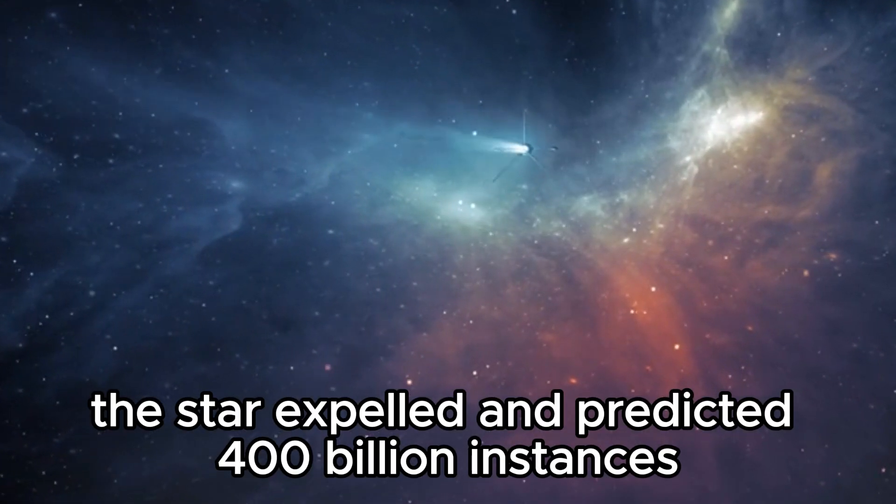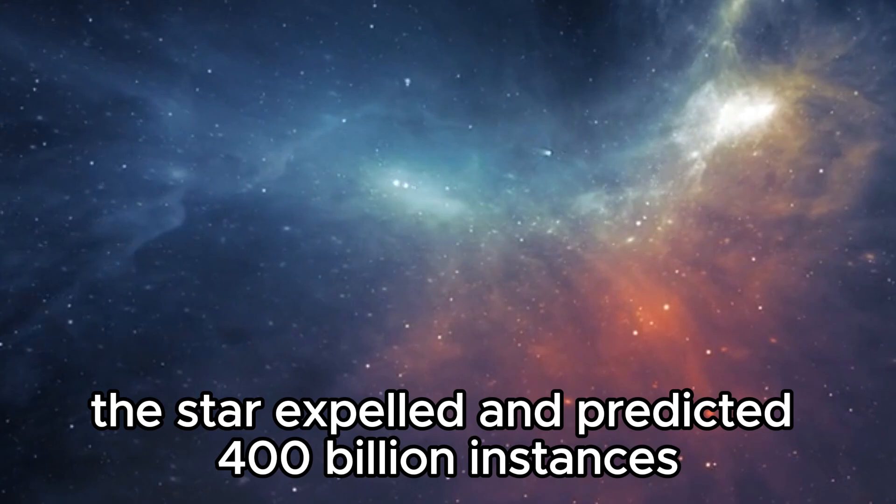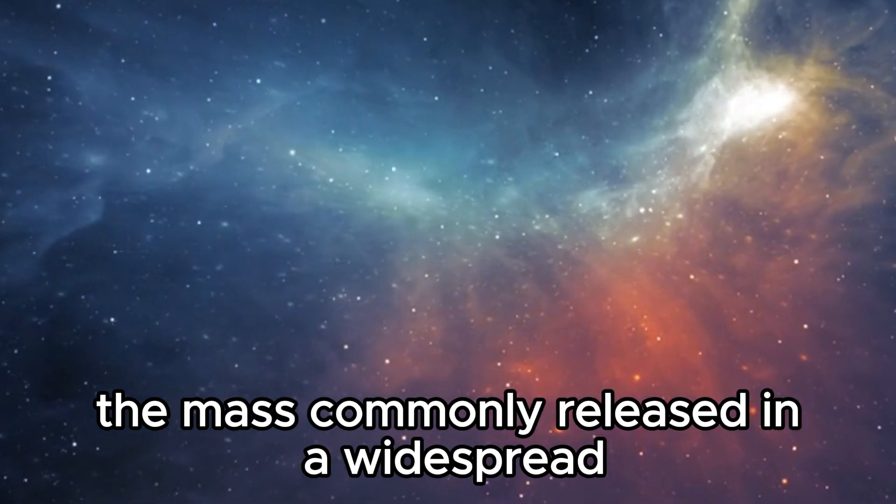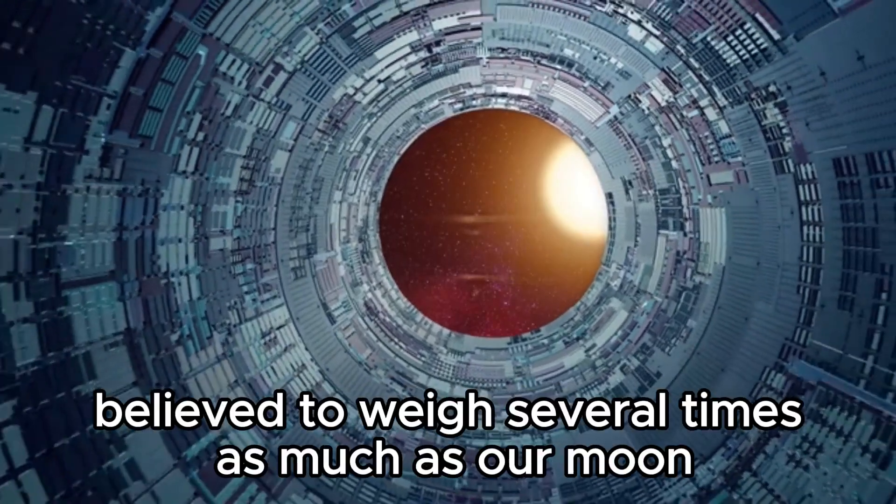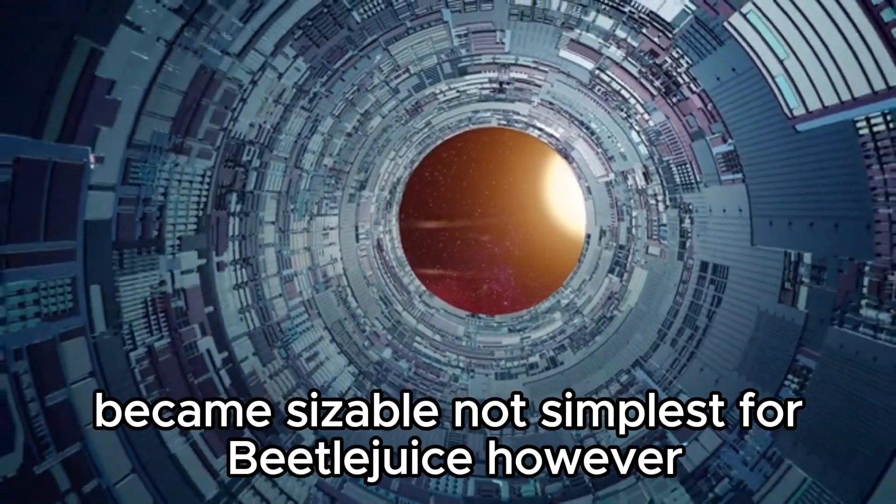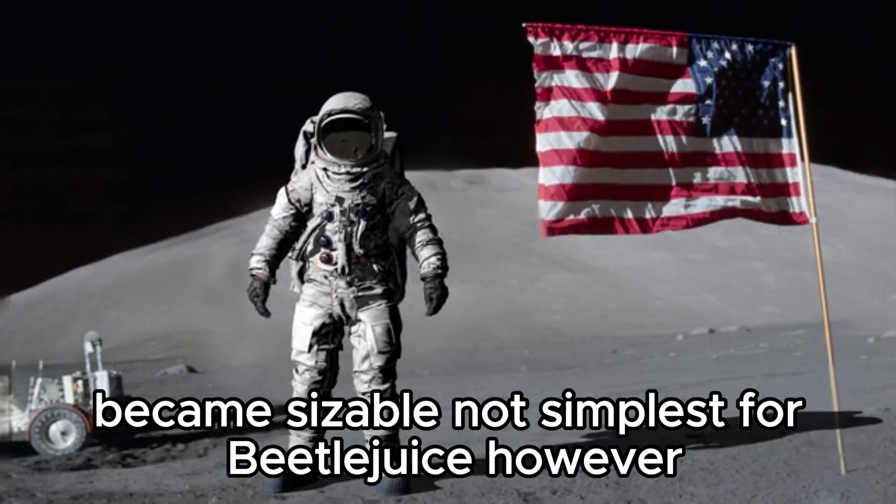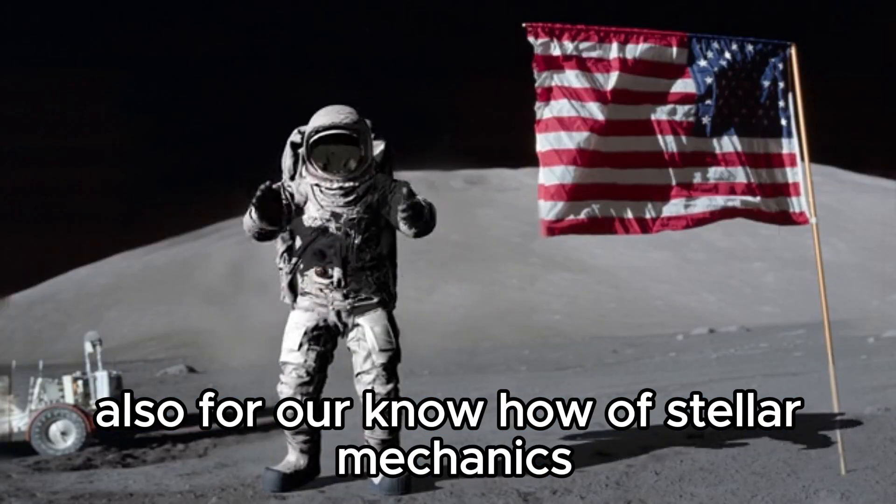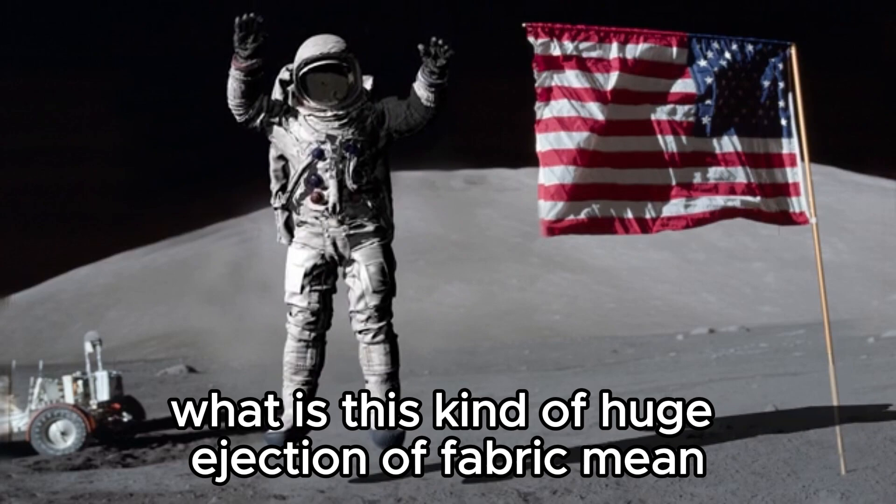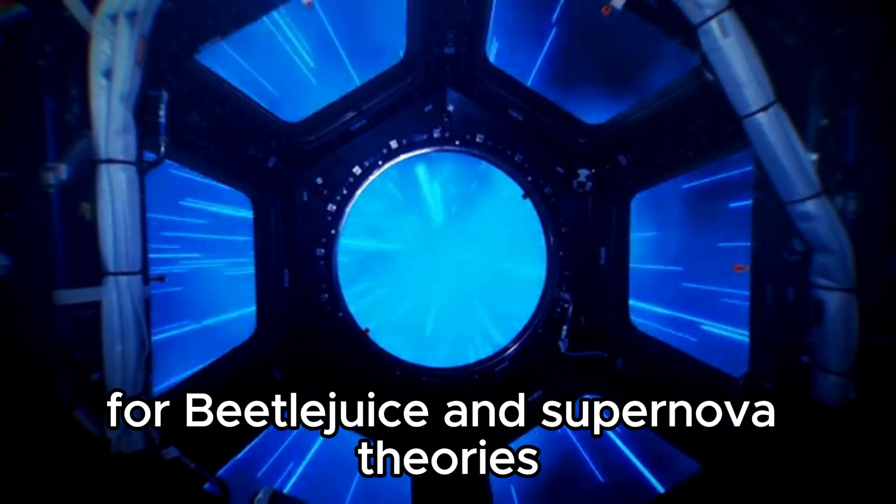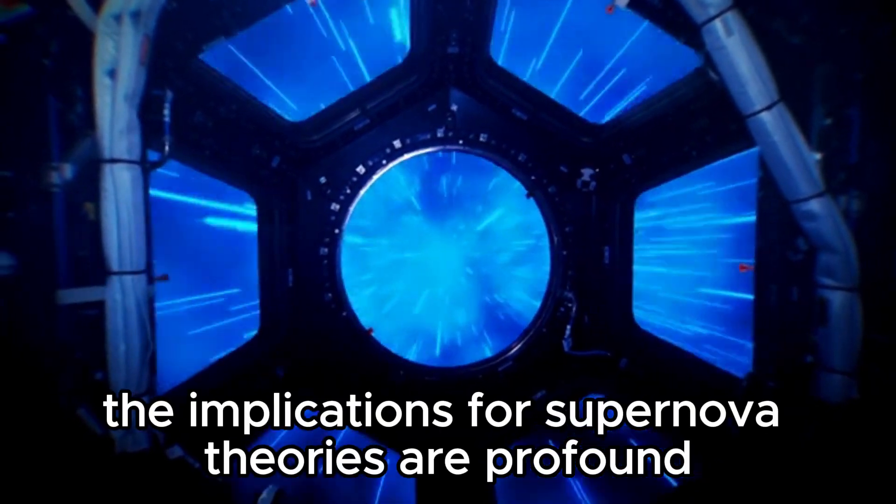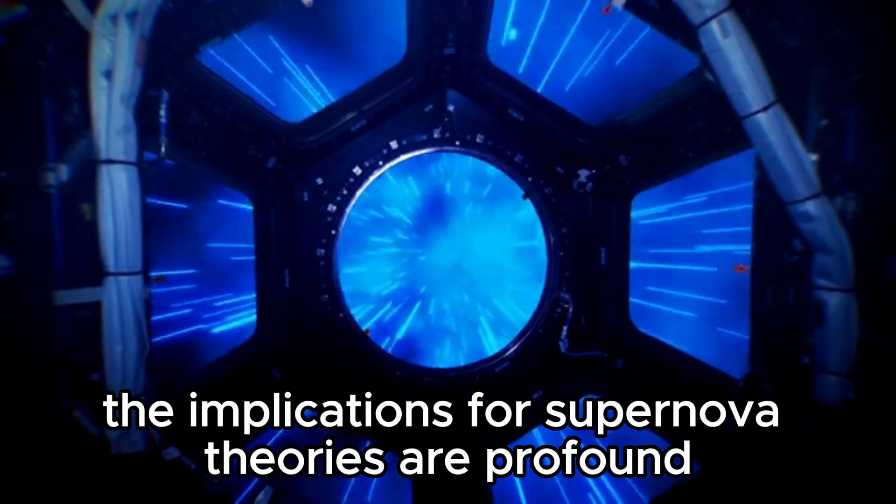The star expelled an estimated 400 billion times the mass typically released in a standard coronal mass ejection. This ejected material, believed to weigh several times as much as our moon, was vast, not only for Betelgeuse but also for our understanding of stellar mechanics. What does such a huge ejection of material mean for Betelgeuse and supernova theories in general? The implications for supernova theories are profound.